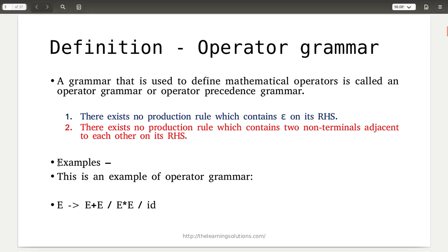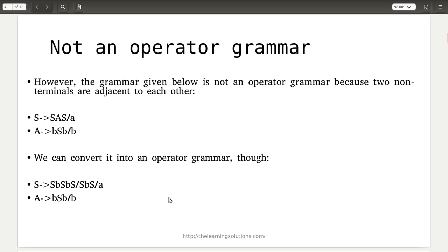By considering these two rules, I have given one example. Such a grammar where E → E plus E, or E star E, or id: here E and E are the two non-terminals and they are not adjacent to each other, because they are separated by the plus sign. In the second production rule they are separated by the star sign, and id is a terminal symbol.